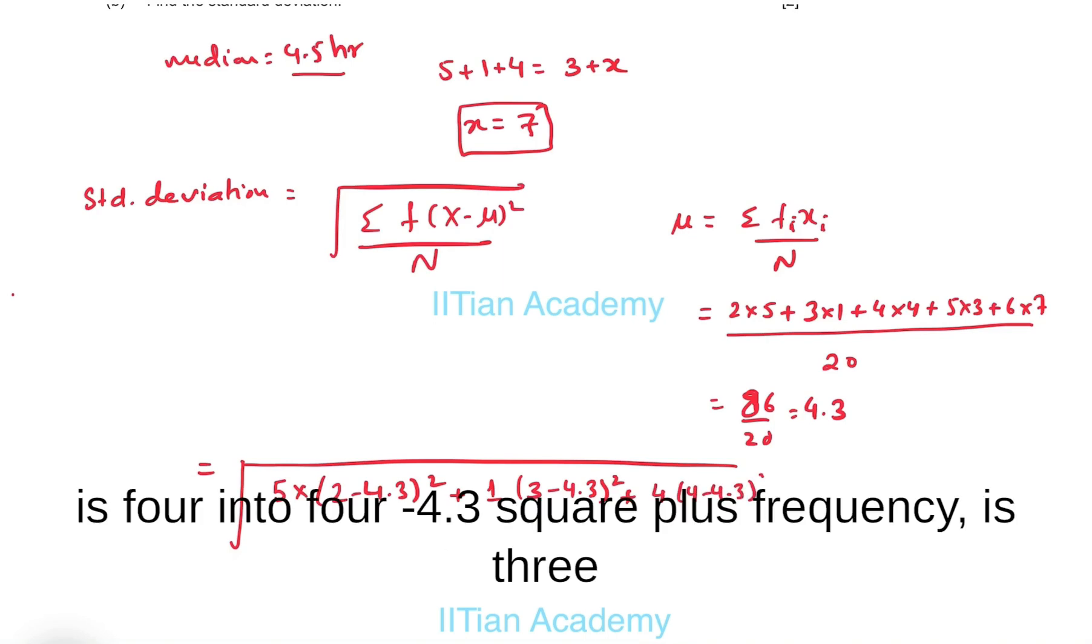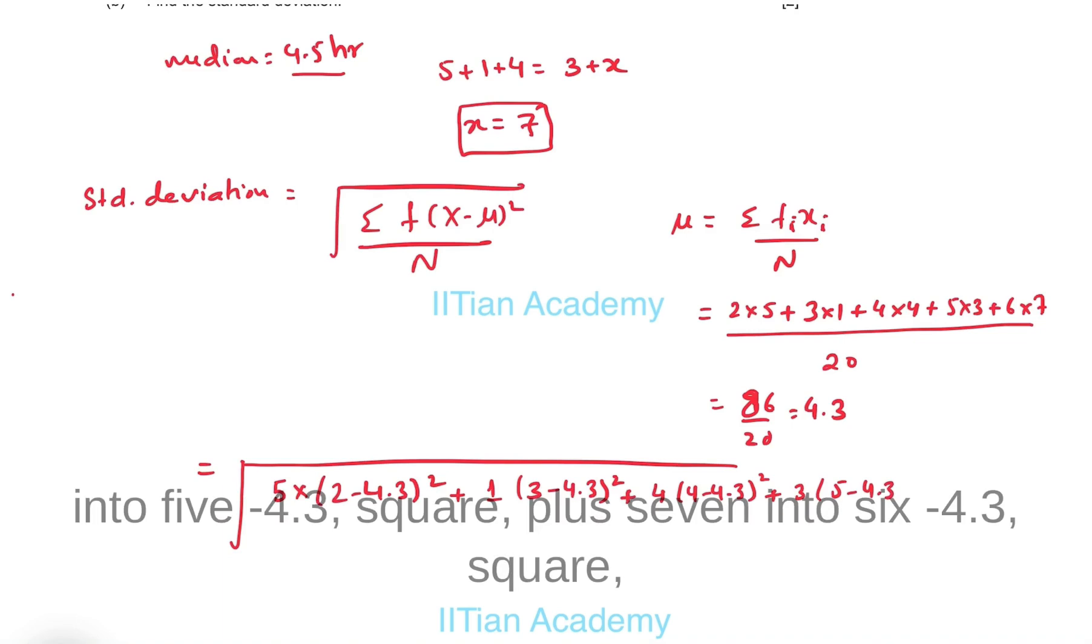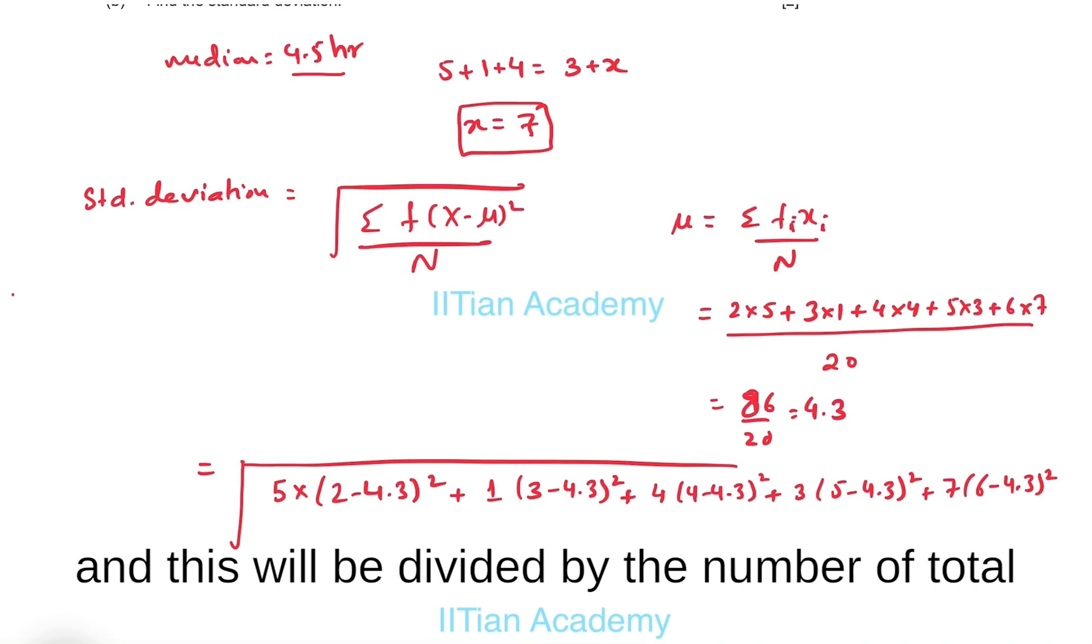...four into four minus 4.3 squared, plus frequency three into five minus 4.3 squared, plus seven into six minus 4.3 squared, and this will be divided by the total number of frequency, which is twenty.